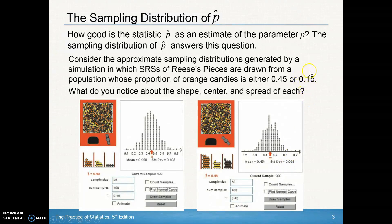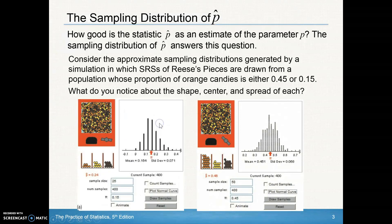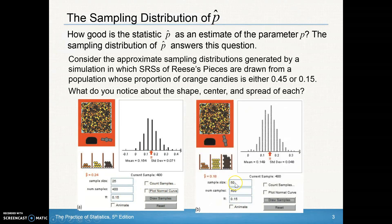Now let's do a simulation where the true population proportion is actually 0.15. With a sample size of 25 and 400 people each taking a sample, the proportion of orange candies came out to be 0.24 — a little bit off, showing some variability. But if we increase our sample size, we get closer to that true population parameter. Our p-hat becomes a better estimate of our true population proportion.